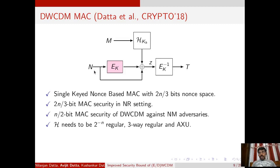However, their construction can take 2n/3-bit nonces, meaning the nonce space of DWCDM is restricted to only 2^(2n/3) many possibilities. Moreover, the security proof essentially relied on a couple of assumptions on the underlying hash function. In particular, the underlying hash function needs to be 2^(-2n)-regular, 2^(-n) 3-way regular, and 2^(-n) almost-XOR-universal.